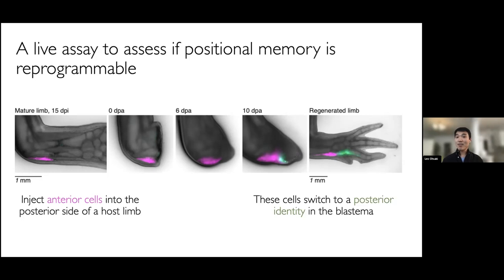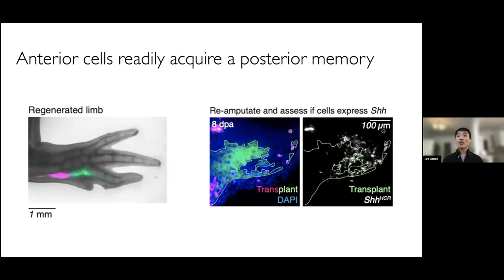To confirm that the previously anterior cells were indeed being posteriorized, we took those regenerated limbs and performed a second amputation through the green part of the limb. This generated a second blastema and more green cells. Importantly, by in situ hybridization, we were able to see that some of these green cells were able to express sonic hedgehog — that posterior signaling center factor. Taken together, this shows that originally anterior cells had indeed been converted to true posterior cells able to express sonic hedgehog during regeneration, something they would never normally do.